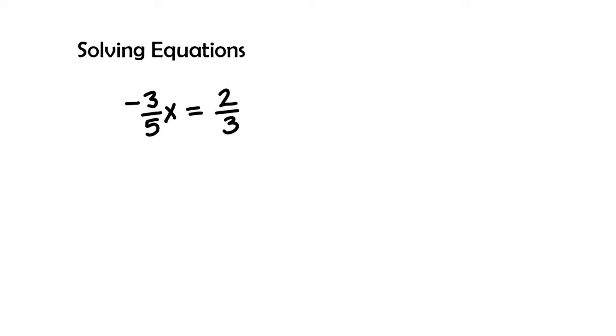In part two of solving equations, our next equation is negative three-fifths x equals two-thirds.